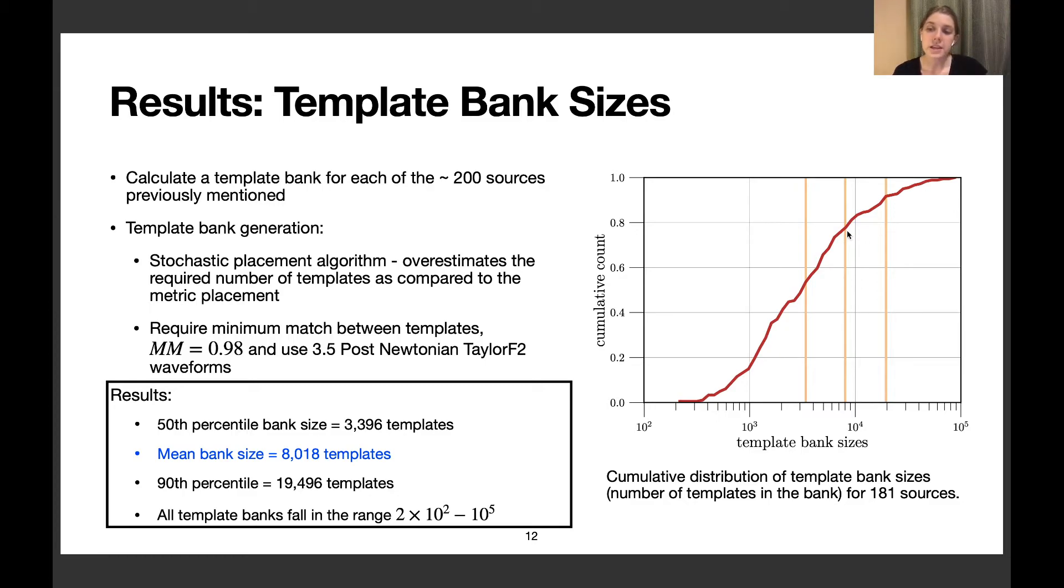This shows the cumulative distribution of all those template bank sizes. The mean size is only about 8,000 templates, and all fell in the range of about 200 to 100,000 templates at the largest. This is a great improvement over previous estimates in the literature, and these template banks would be small enough to be computationally feasible to search over.